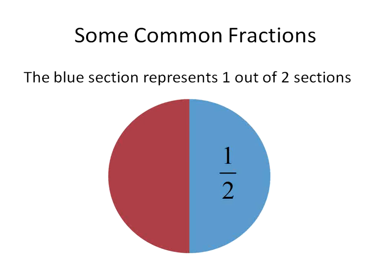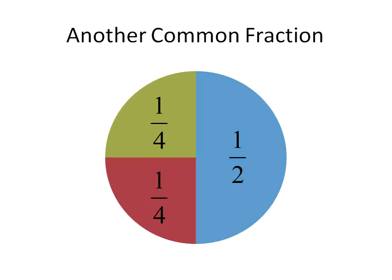So in this case, one section out of two, one half represents half of this circle. We can divide things even further and show on the left side here, these are one out of four. You'll notice if you had four of these, you would fill up the entire circle, one fourth, two fourths, three fourths, four fourths. So one fourth is a common fraction. It's also called one quarter. So that's another common fraction.